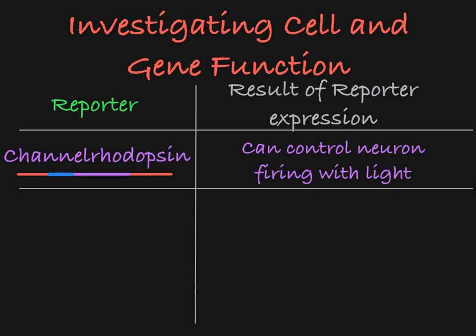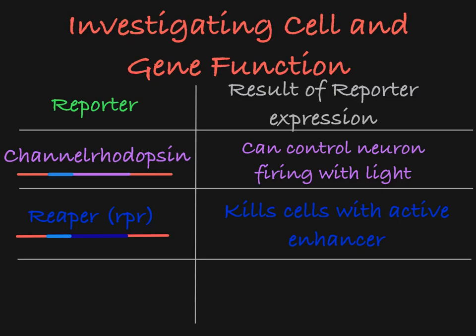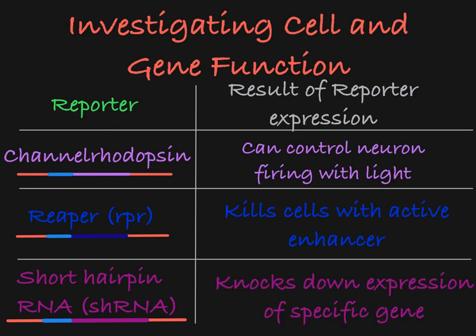Another possibility is to cross your driver line with a reporter line that expresses the gene REAPER. When expressed, this gene will kill the cell, so the cells will die if or when the enhancer controlling the expression of the transactivator is active. You could also cross this driver line with a reporter line that encodes short hairpin RNA used to knock down the expression of a specific gene through RNA interference, allowing you to decrease expression of target genes in the specific cells that have the active transactivator, giving you a glimpse into the role of that gene in the specific cell.